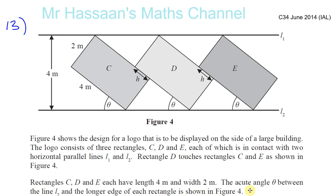Okay, now for question 13 part B from the June 2014 IAL. Figure 4 shows the design for a logo that should be displayed on the side of a large building. The logo consists of three rectangles.